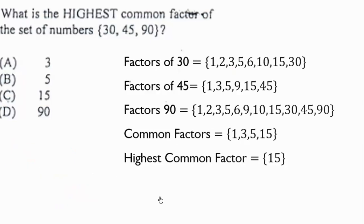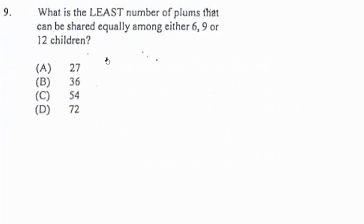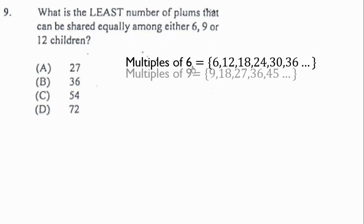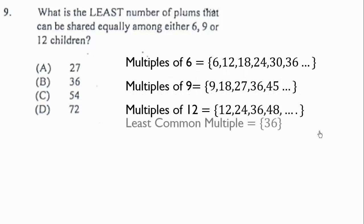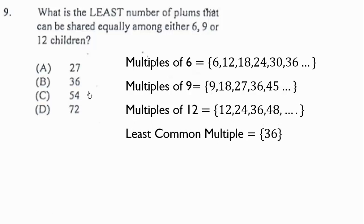Question 9: what is the least number of plums that can be shared equally among either 6, 9, or 12 children? That means we find the least common multiple of 6, 9, and 12. Listing multiples: the least common multiple is 36. For prime factorization: 6 = 2 × 3 and 9 = 3 × 3.